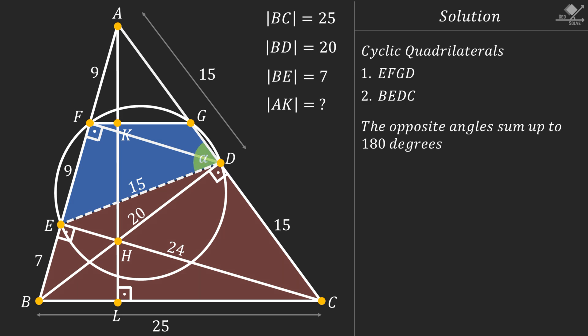Let's start with labeling this angle as alpha, so the opposite angle will be 180 minus alpha. Therefore this angle will also be alpha degrees. Notice that angle D of the second quadrilateral is also 180 minus alpha degrees, so the opposite angle of this quadrilateral will also be alpha degrees. Now notice that we have two congruent alpha degree angles here, which means that line segment FG and BC are parallel.